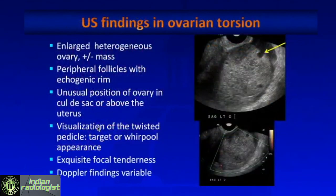So what are the ultrasound findings in ovarian torsion? You're going to see an enlarged heterogeneous ovary. You may or may not see a mass, because oftentimes the patient will have a mass which acts as the lead point or fulcrum for the torsion. If there's no mass, you're going to see peripherally displaced follicles. Sometimes they have an echogenic rim because there is edema around the follicles.